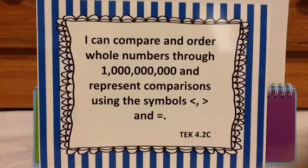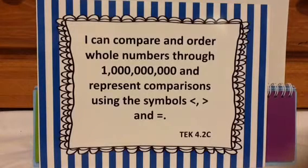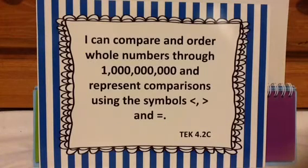Hi scholars, today we're going to look at TEKS 4.2c. It says: I can compare and order whole numbers through 1 billion and represent the comparisons using the symbols less than, greater than, and equal to. I will be going over place value first, representations for it, how we know which one is larger, and then a strategy. So let's get started.